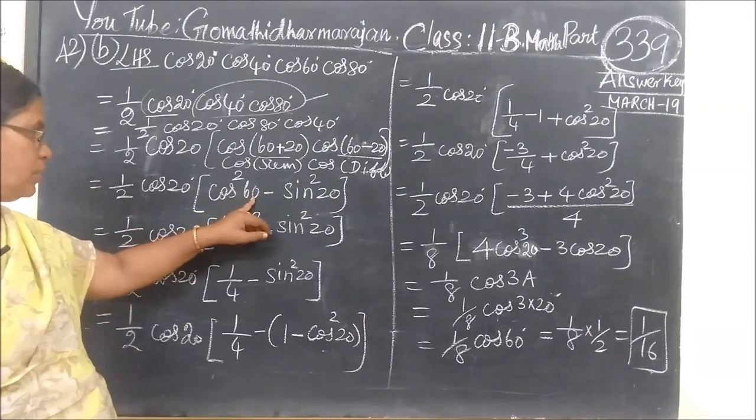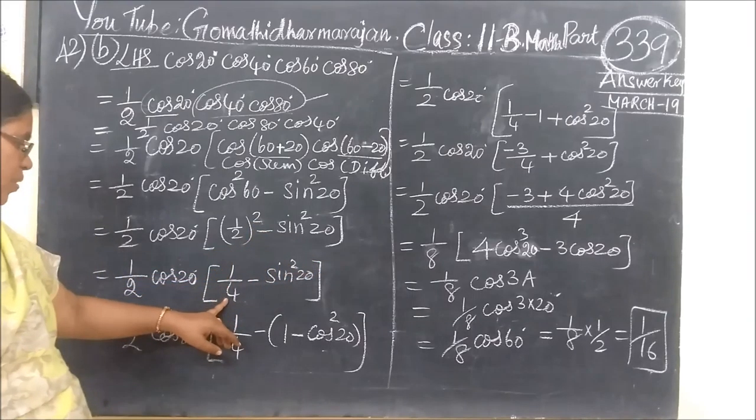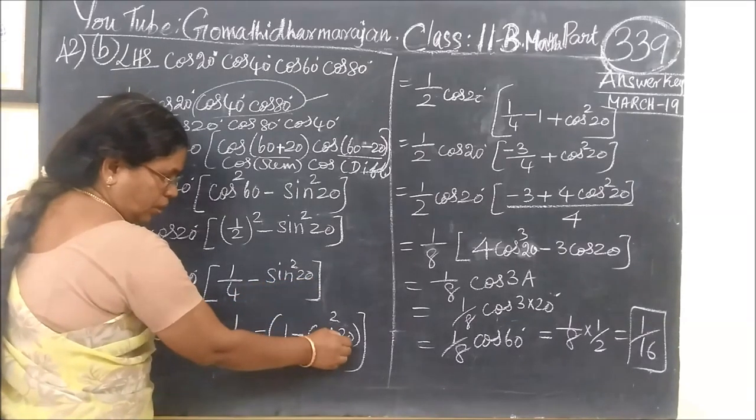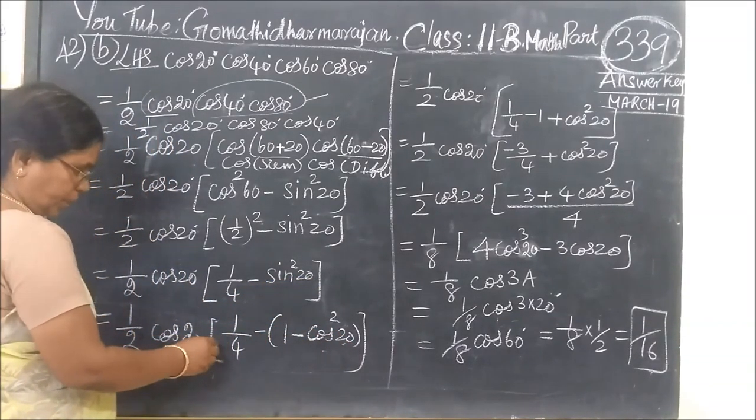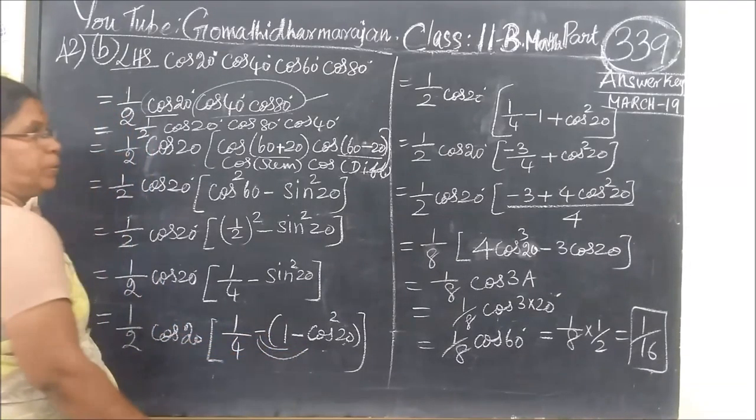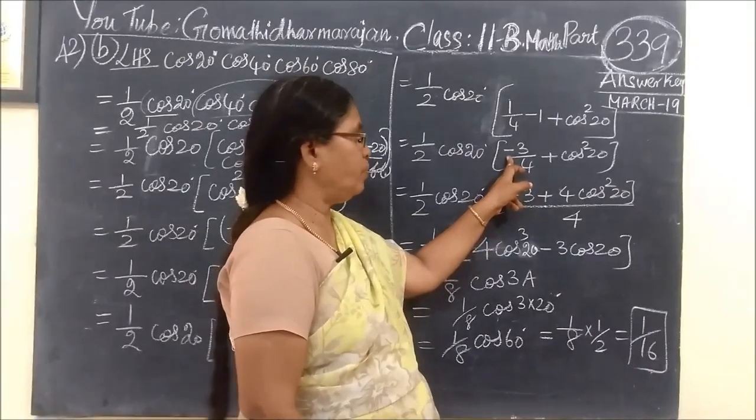For cos 60, we know it equals 1/2. Squared, that's 1/4. Sin squared theta equals 1 minus cos squared theta. The quantity here is minus. So 1/4 minus 1 equals minus 3/4.